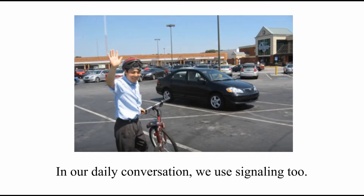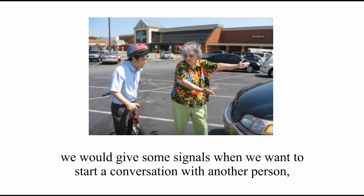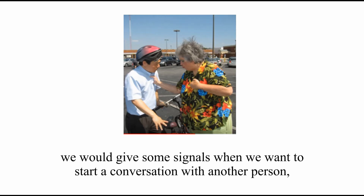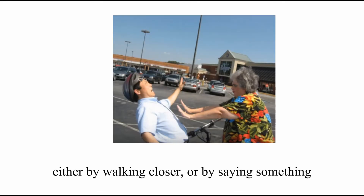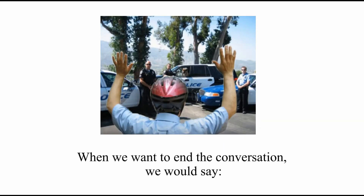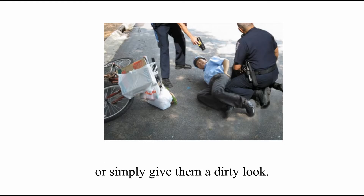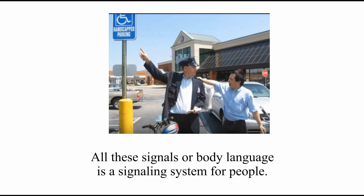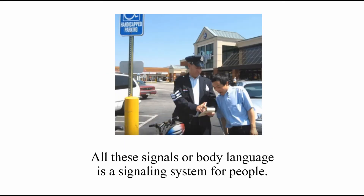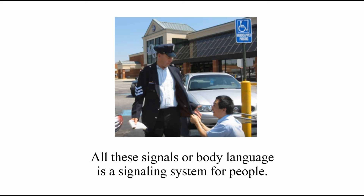In our daily conversation, we use signaling too. For example, we would give some signals when we want to start a conversation with another person, either by walking closer or by saying something. When we want to end the conversation, we would say it was really a pleasure to talk to you, or I have to go now. Or simply give them a dirty look — just kidding. All these signals or body language is a signaling system for people.